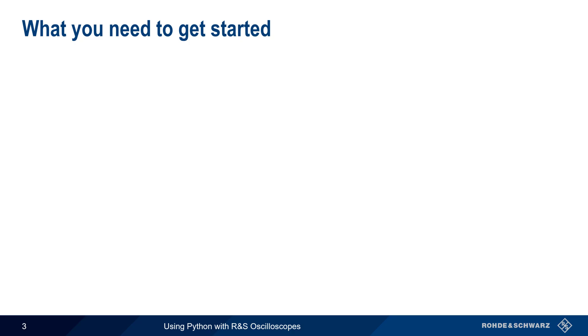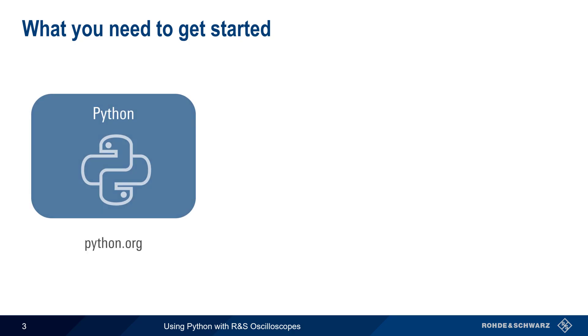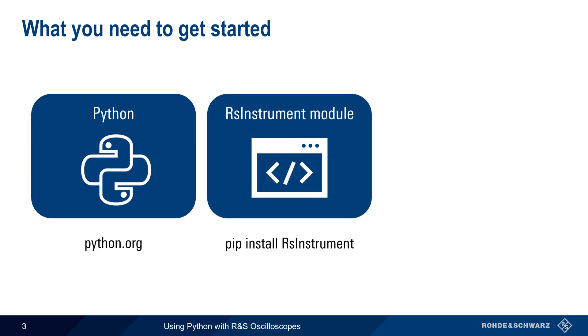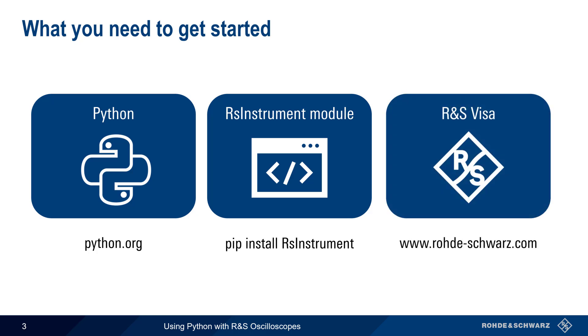Three software packages are needed: A Python installation, preferably version 3.8 or higher. The RsInstrument module, which can be installed using the standard Python pip command. And a test and measurement VISA library, such as R&S VISA, which is available from the Rohde & Schwarz website.